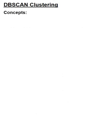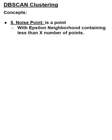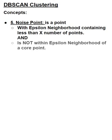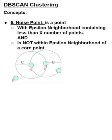The next concept is how DBSCAN classifies points as noise points. So a noise point is a point with an epsilon neighborhood containing less than X number of points and is not within the epsilon neighborhood of a core point. In our example, R is a noise point.